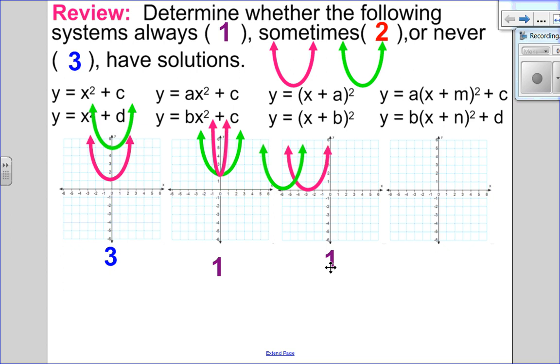In the last one, I have vertex form and notice all the parameters are different. We could have different vertical stretches, different translations horizontally and vertically. If I move this one over here and there and this one over here and down, that might have a solution, but it might not. It really is hard to tell on this one because all the parameters are different.